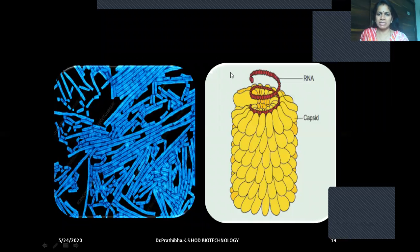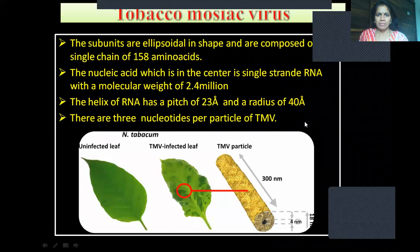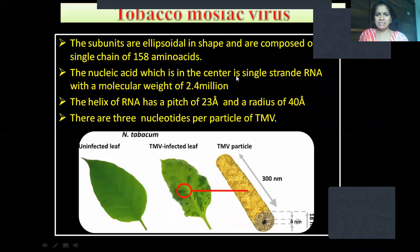Here you can see the structural representation of tobacco mosaic virus, where you can see the RNA and capsid. The subunits are helical in shape and are composed of a single chain of 158 amino acids. The nucleic acid in the center is single-stranded RNA with a molecular weight of 2.4 million bases. The helix of RNA has a pitch of 23 angstrom and a radius of 40 angstrom.